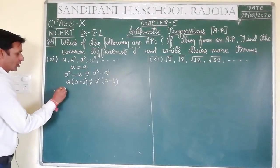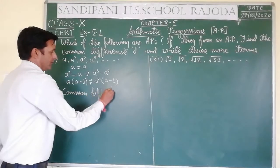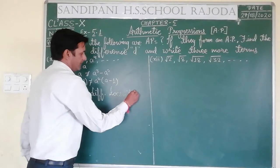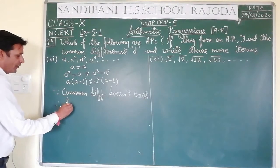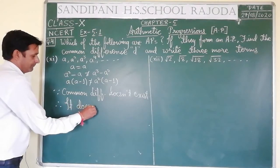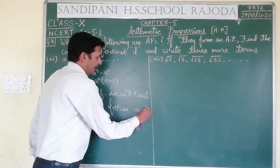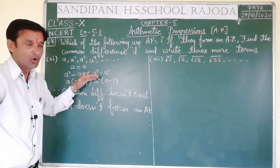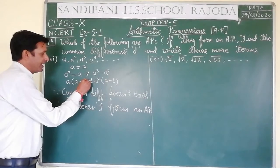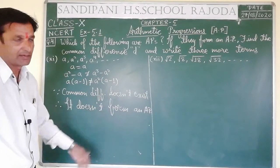Since the differences are not equal, common difference does not exist. Therefore, it does not form an AP. To find common difference, we subtract the first term from the second and the second from the third. If both are equal, common difference exists; otherwise it does not form an AP.